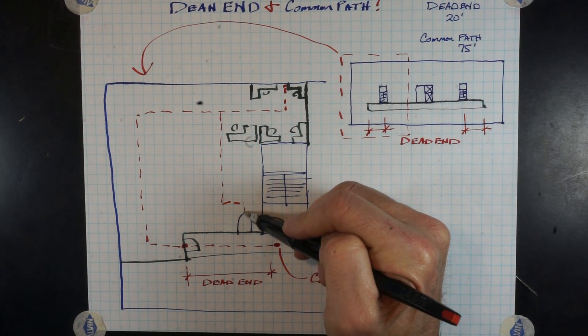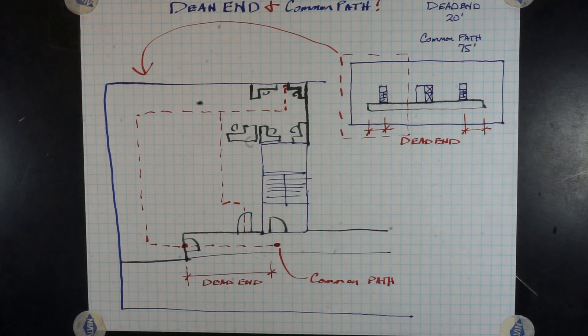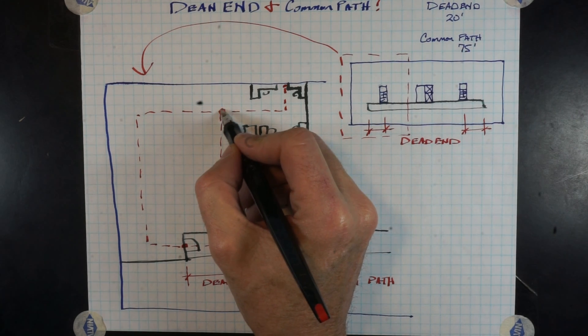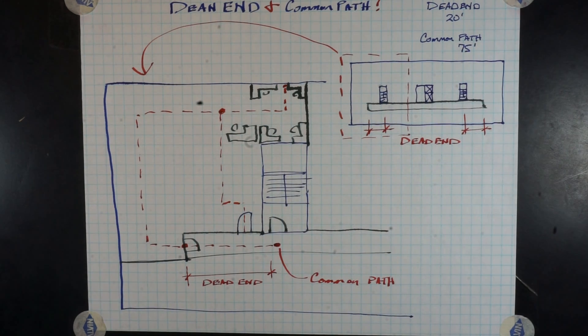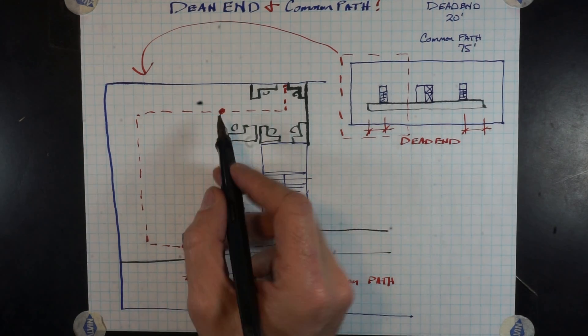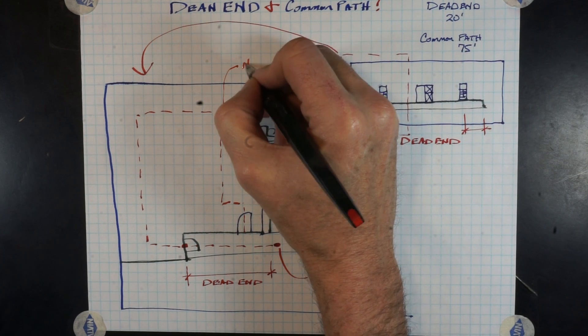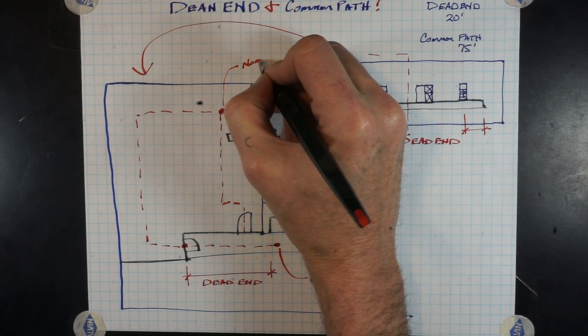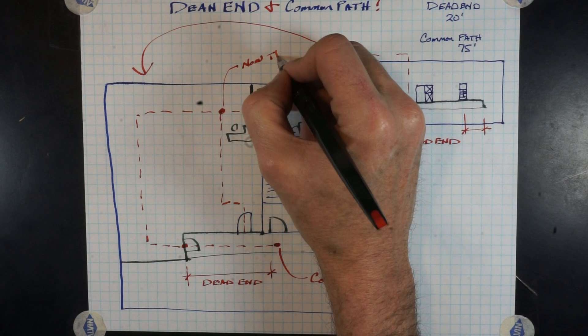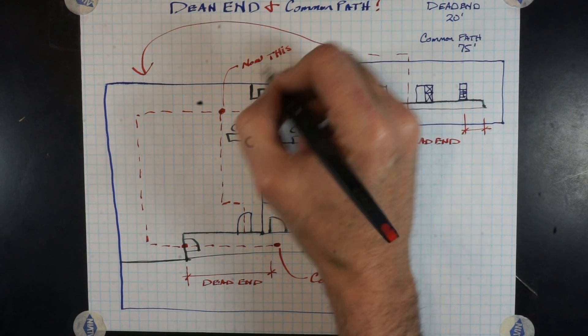If we put a door here, where is our decision point? Our decision point could be right here, depending on how the furniture is laid out in the office. So this point right here is now our common path of travel distance. So starting at the first location all the way to this dot is where our common path of travel is decided.